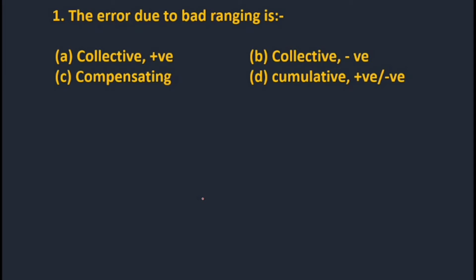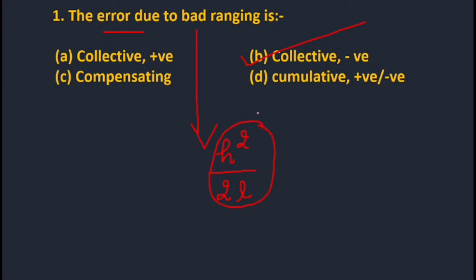The error due to bad ranging is always negative and cumulative in nature. Option B is correct. The formula for this error, as discussed in theory lectures, is H²/2L — which is also the slope correction formula for misalignment or bad ranging.